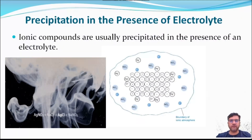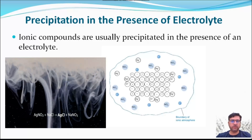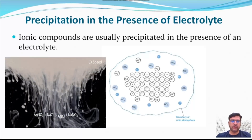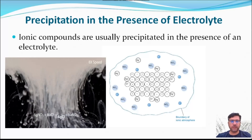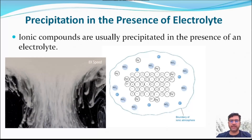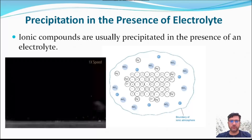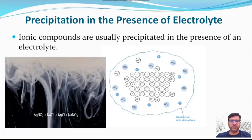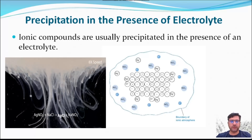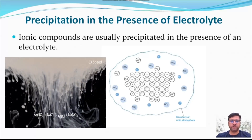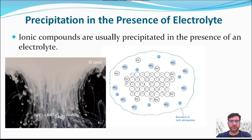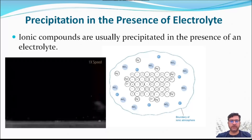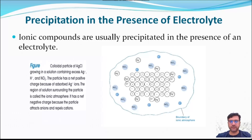Precipitation in the presence of electrolyte. Ionic compounds are usually precipitated in the presence of an electrolyte. A colloidal particle of silver chloride growing in a solution containing excess silver, hydrogen, and nitrate has a net positive charge because of adsorbed silver ions. It also has a net negative charge because the particles attract anions and repel cations.